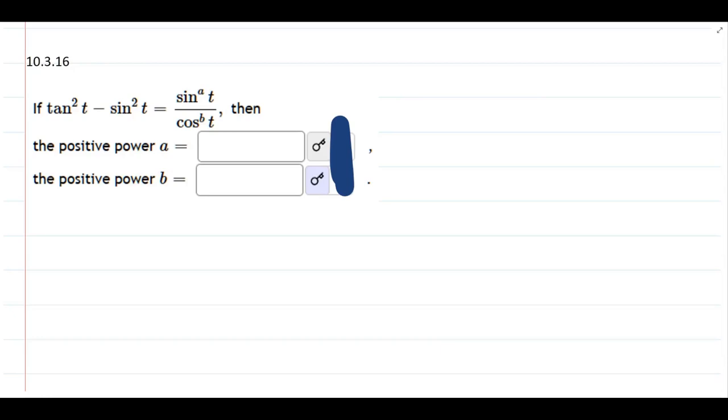We have to start on the left, and we have tangent squared and sine squared, so there's a few options of what to do first. I could try to use Pythagorean identity, but I think it would be better to use a strategy where we turn tangent into sine over cosine